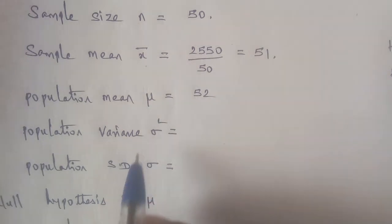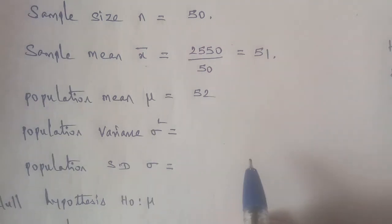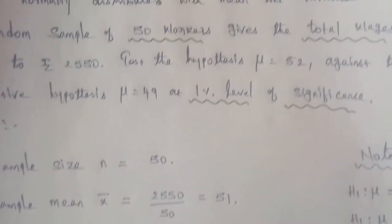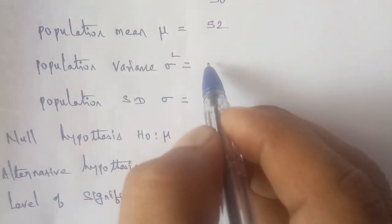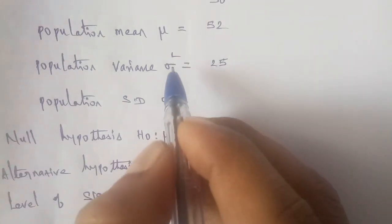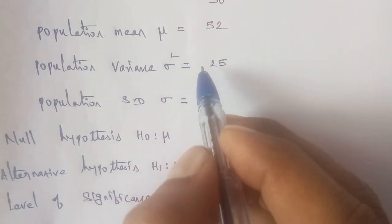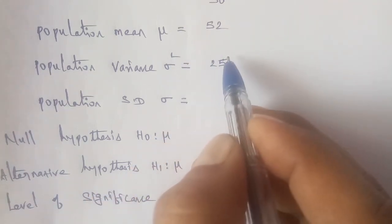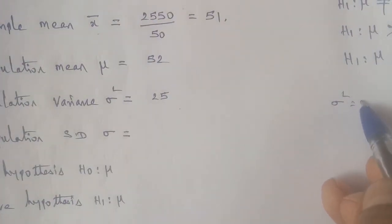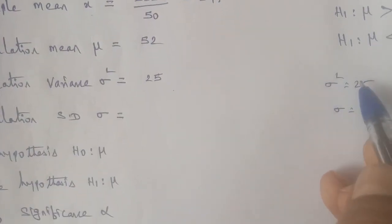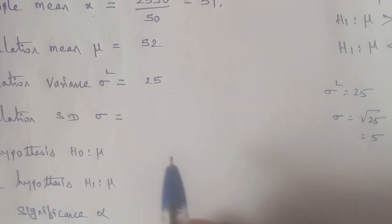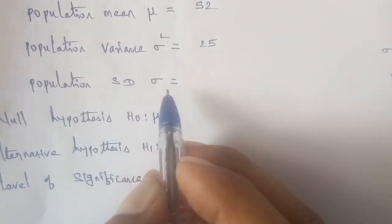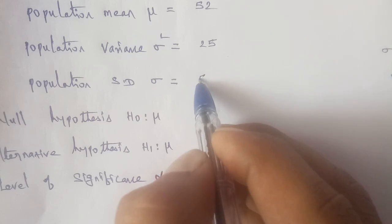The population variance σ² = 25, as given in the problem. Therefore, the population standard deviation σ = √25 = 5.